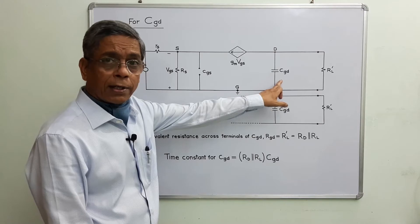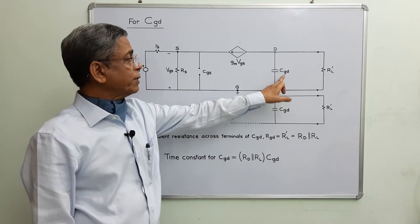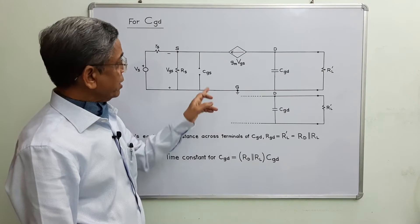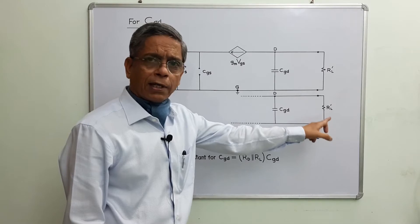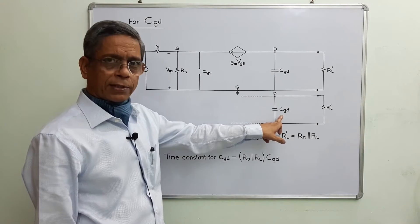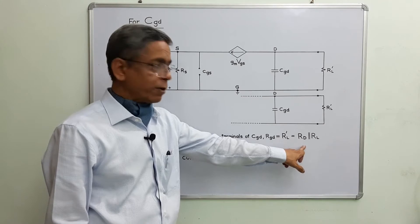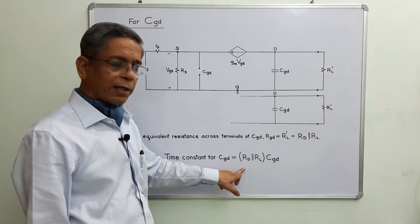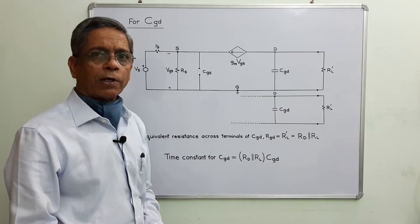As per Step 2, I select CGD and consider CGS as open circuit. I determine the Thevenin equivalent resistance across the terminals of CGD. With the input short-circuited to zero, the voltage controlled current source becomes zero, so only the drain-side circuit is effective. The Thevenin equivalent resistance across the terminals of CGD is simply RL', which is the parallel combination of Rd and RL. The time constant for CGD is T2 = RGD · CGD = RL' · CGD.